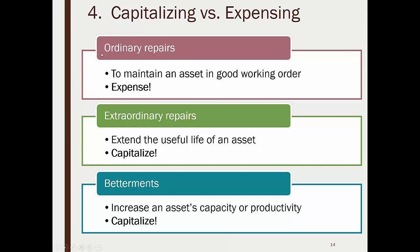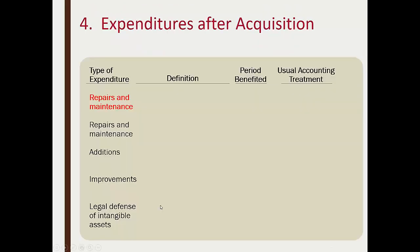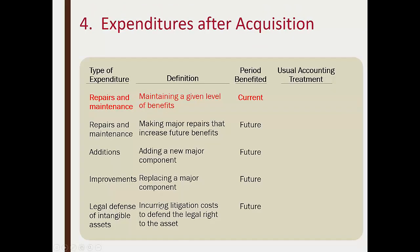To review capitalizing versus expensing: ordinary repairs are expensed; extraordinary repairs that extend the useful life of an asset are capitalized; and betterments — improvements that make an asset better — are also capitalized. For Zoomie Pizza, when they put a pizza oven in a delivery truck, that bettered the truck — it turned it into something more than just a truck, an oven on wheels — so that would be a betterment.